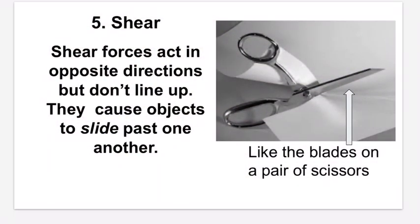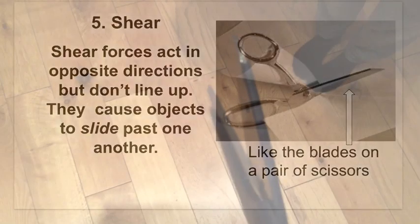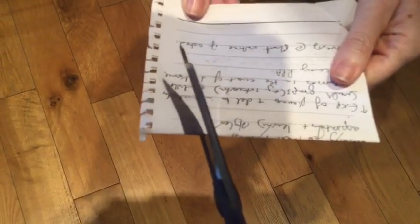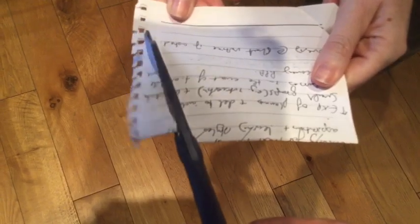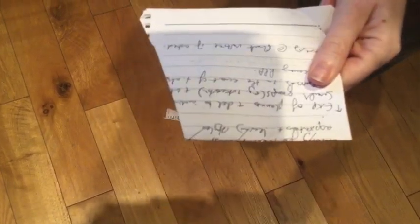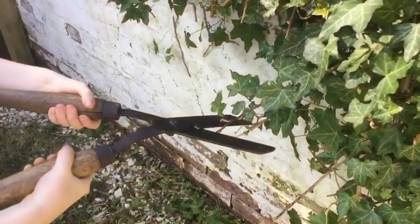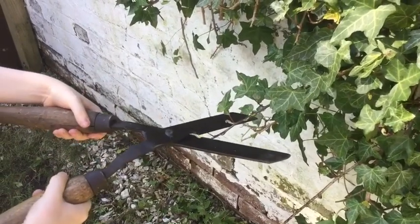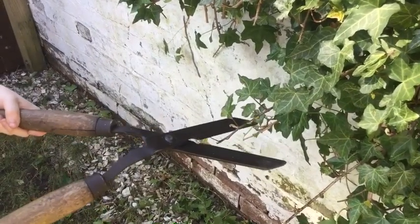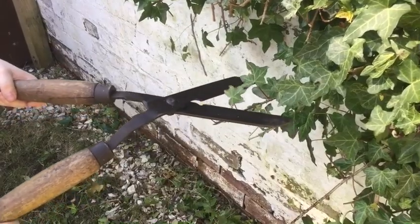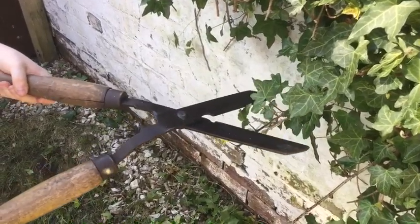Force number five is shear — this is where objects slide past each other. Looking at these scissors, you can see the two blades move in opposite directions but don't quite line up. When you put a piece of paper inside, the shear forces cut the paper. We've also got some garden shears that do the same thing as scissors — they're actually called shears because, like scissors, they use shear forces to cut through things.